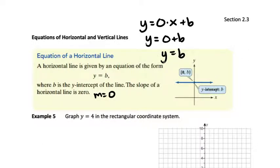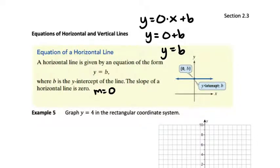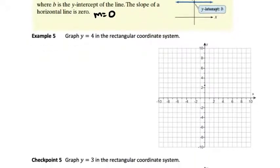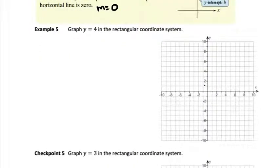So y equals b is going to be the result where b is the y-intercept. So I plot b on the y-axis and the line is going to be a horizontal line through that point. Example 5 says to graph y equals 4. So I'm going to plot a point on 4 on the y-axis and then I can just draw the line through the point.